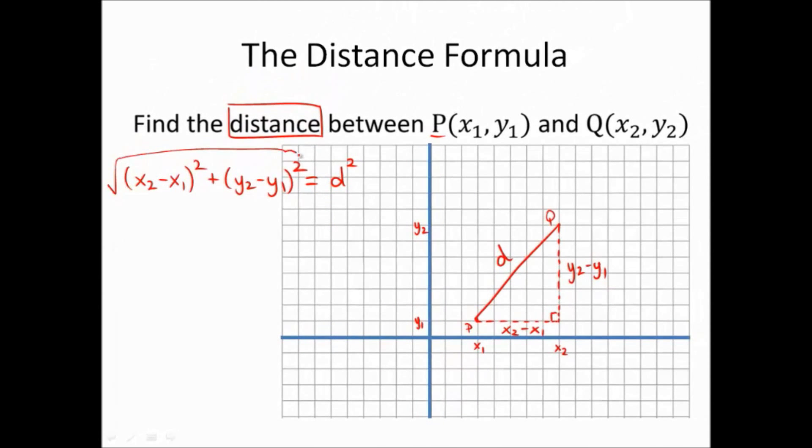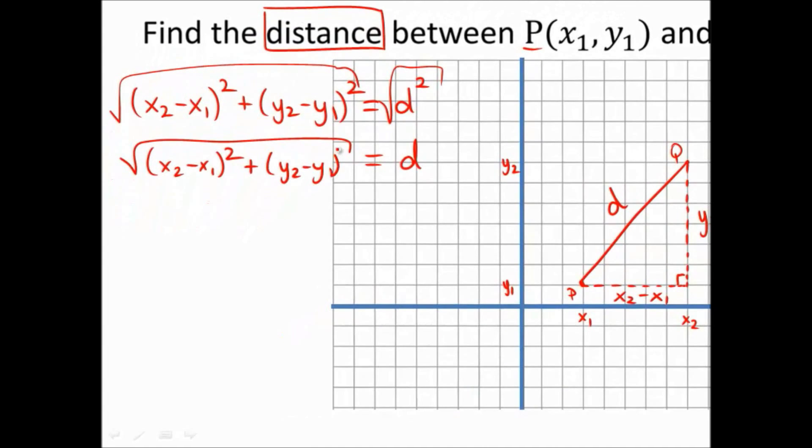This gives us d equals the square root of (x2 minus x1) squared plus (y2 minus y1) squared.